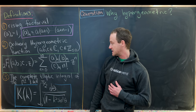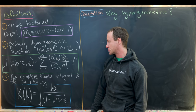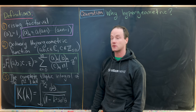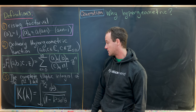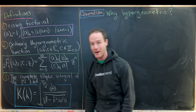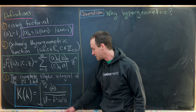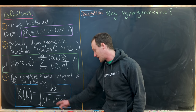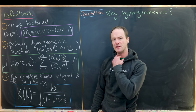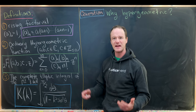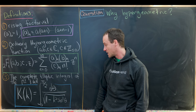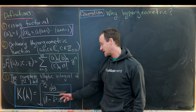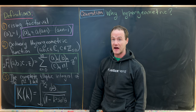We also need to define the complete elliptic integral of the first kind. In an upcoming video, we'll look at the complete elliptic integral of the second kind as well. This is defined by the function capital K of lowercase k: the integral from zero to pi over two of d theta over the square root of one minus k squared sine squared theta. It's called an elliptic integral because it's related to finding the perimeter of an ellipse, and these don't have a closed antiderivative, which is why they define a class of objects on their own.